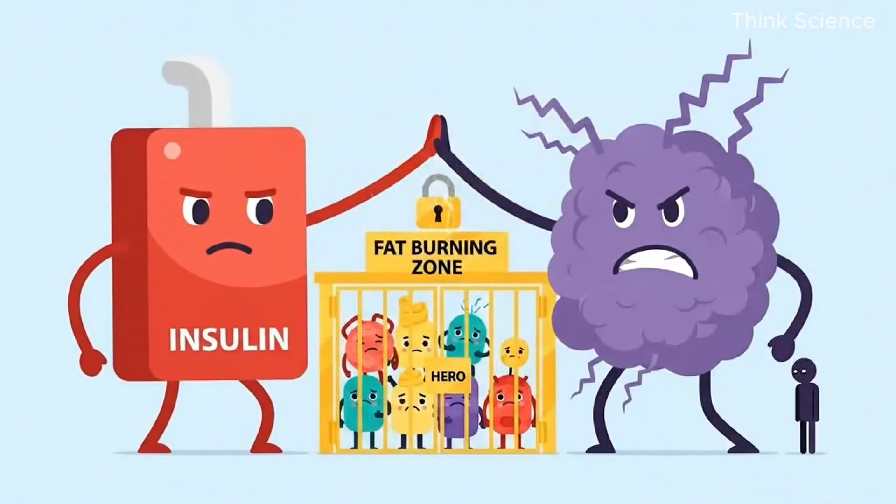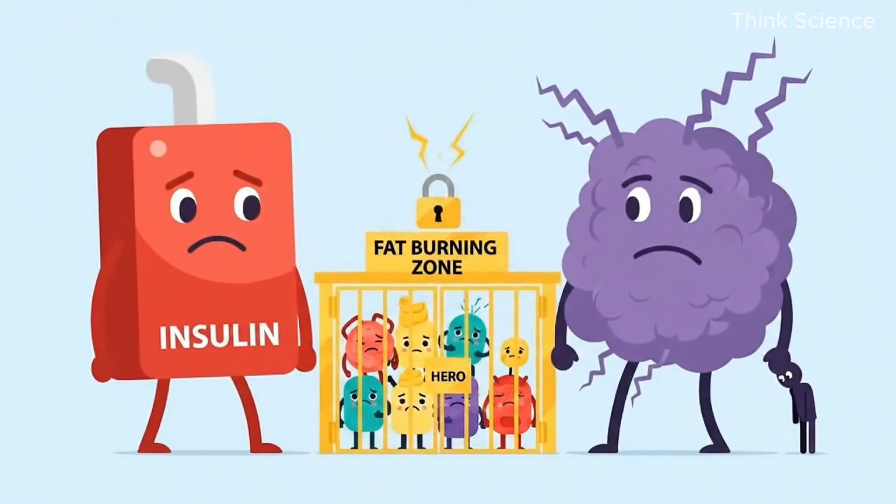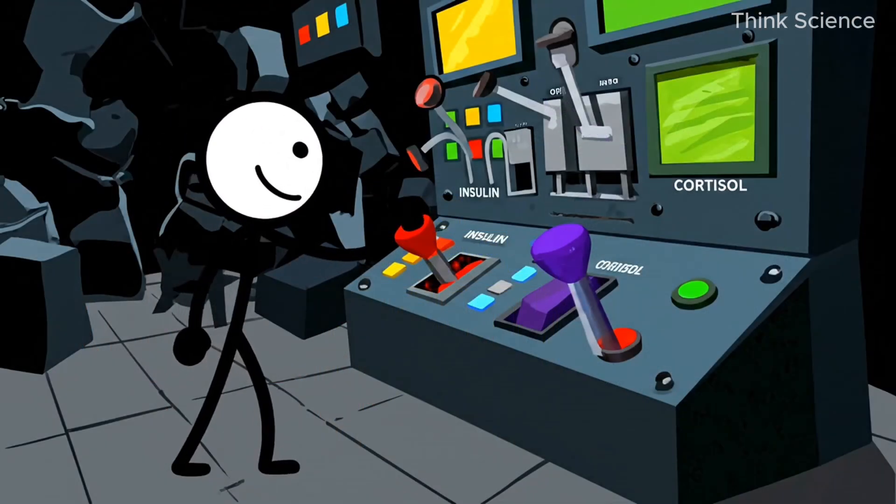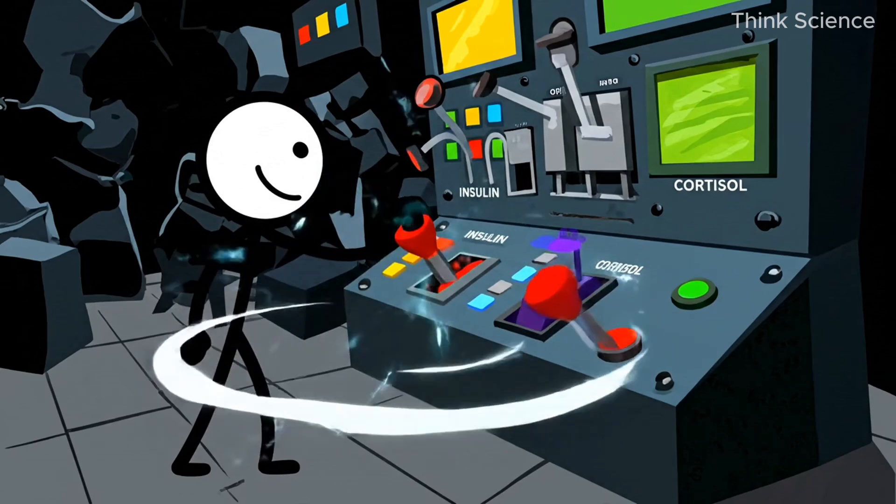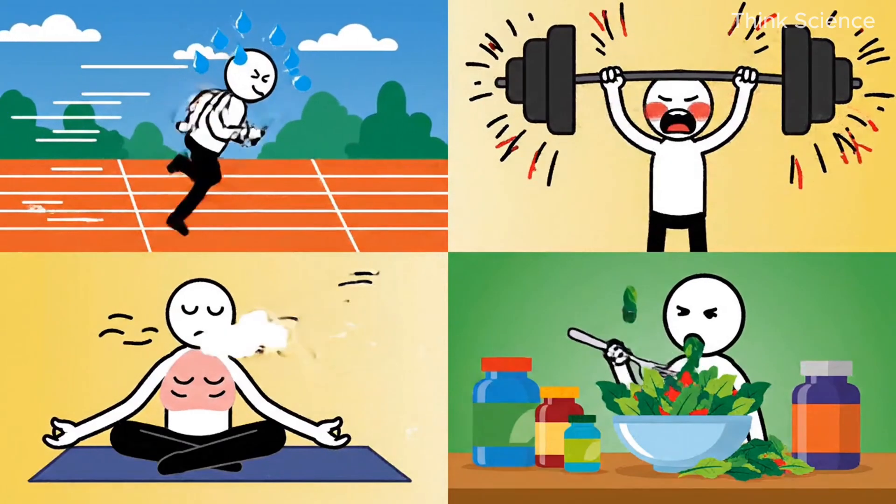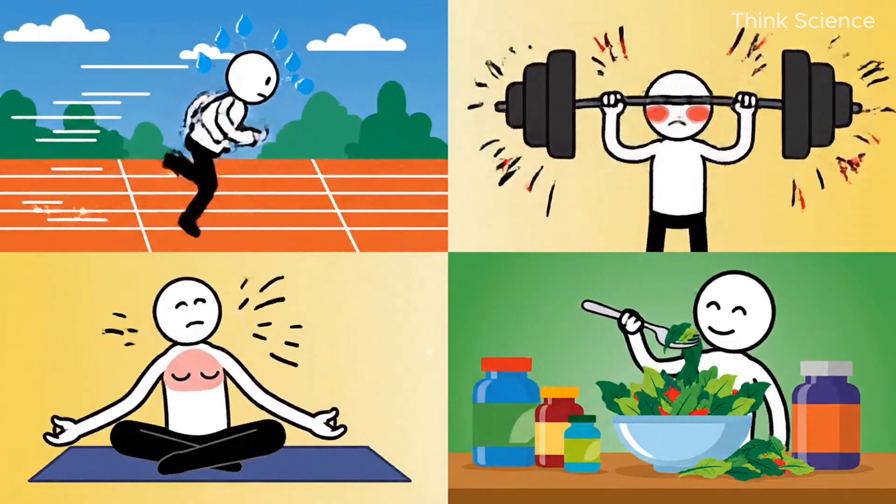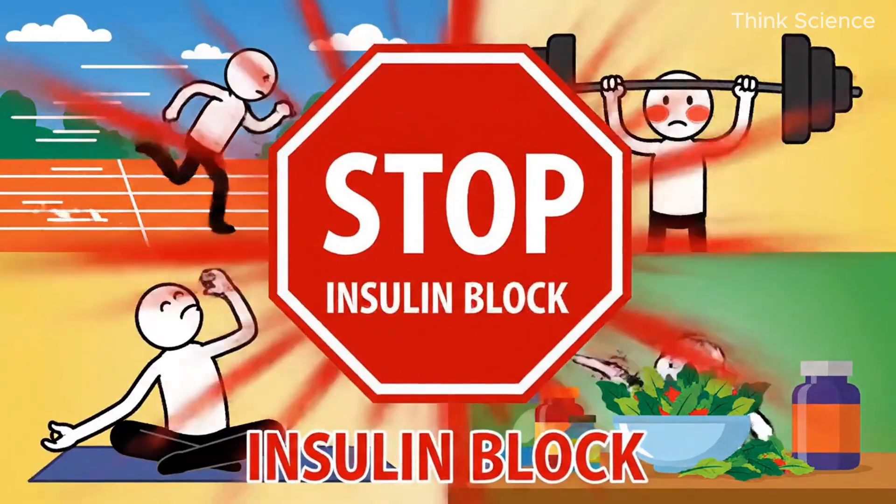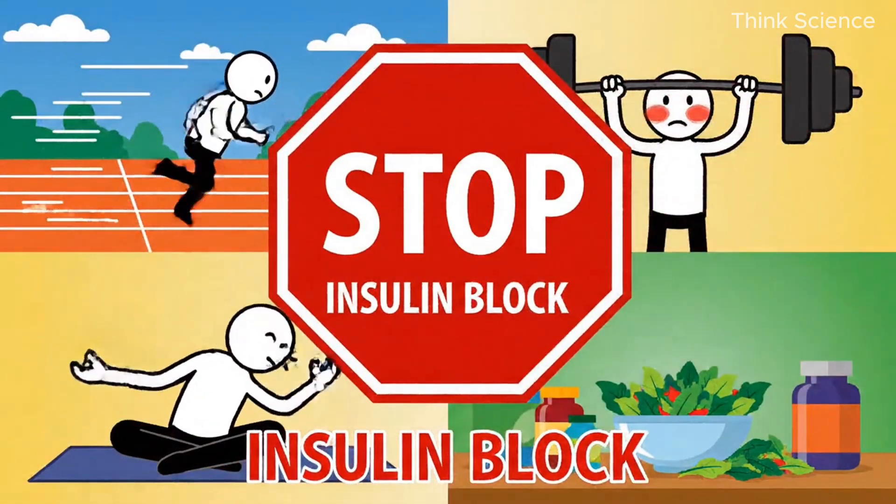Insulin is the master switch. When insulin is high, your body stores fat. It also shuts down all your fat-burning hormones instantly. You can sprint, lift, breathe, diet, or take supplements. But if insulin is up, fat loss stalls.